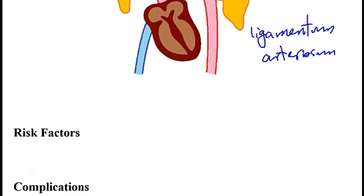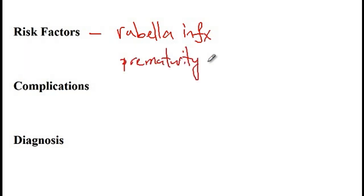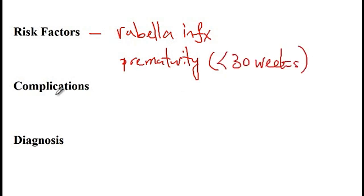Risk factors for the development of patent ductus arteriosus — meaning the ductus arteriosus doesn't close after birth — include congenital rubella infection as well as prematurity, such as giving birth before 30 weeks of gestation.